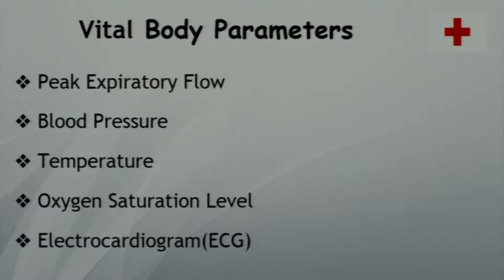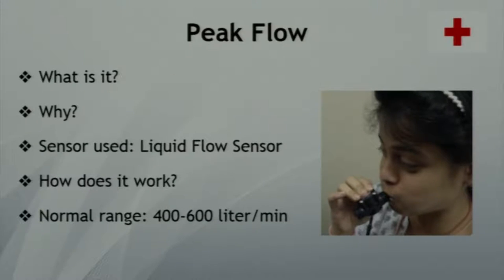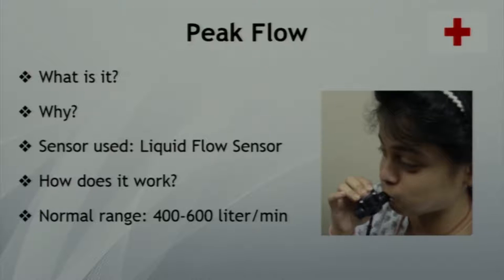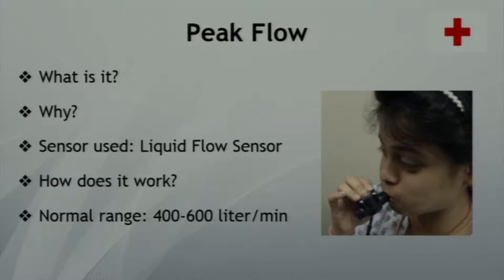The vital body parameters we implemented are peak flow, blood pressure, temperature, oxygen saturation level, and ECG. Peak flow is the maximum speed of a person's expiration. Since more than 235 million people suffer from asthma, and during an asthma attack the person's windpipe swells up causing a drop in peak flow, it is a very important vital parameter. The sensor we used was a liquid flow sensor consisting of a rotor with magnets and a Hall effect sensor. When air is blown in, the rotor rotates, causing a change in magnetic field, and the Hall effect sensor generates pulses. Peak flow is measured by counting these pulses. The normal range is 400 to 600 liters per minute.